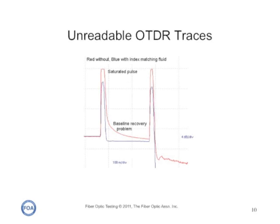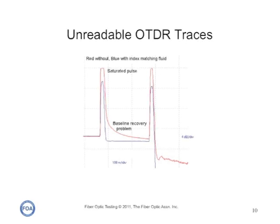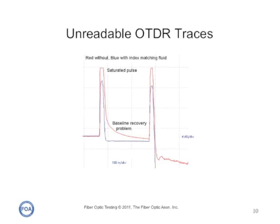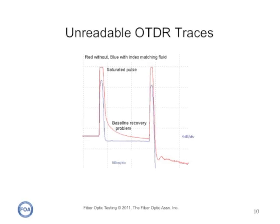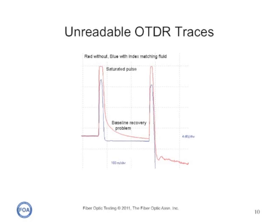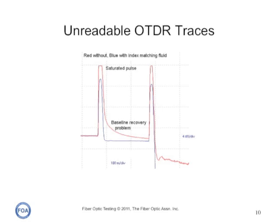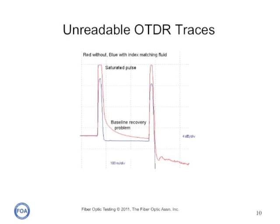Sometimes OTDR traces are unreadable. Here are two examples of the same cable, but with very highly reflective events versus less reflective ones. As you can see, if you get a very highly reflective event that saturates the receiver of the OTDR, you may have a baseline recovery problem that makes it impossible to actually make any loss measurements on that cable.